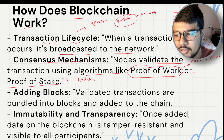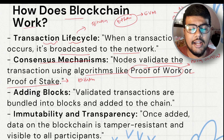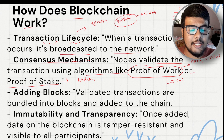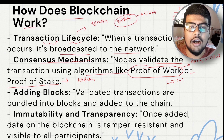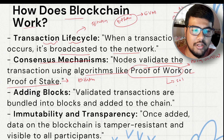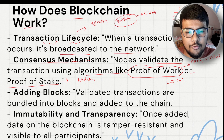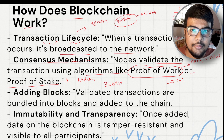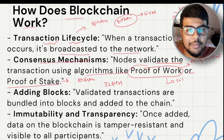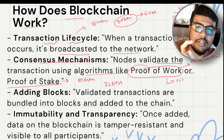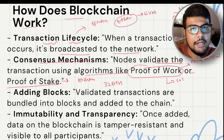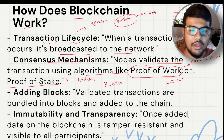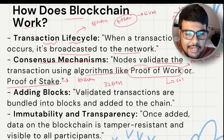Proof of work basically involves solving a mathematical puzzle to broadcast a new transaction into the existing network. Proof of stake requires at least 32 Ethereum to participate, ensuring you can run your algorithm. In Ethereum, every line of code you write is executed and the cost is charged per line. In Bitcoin, you pay a lump sum after all execution is complete.